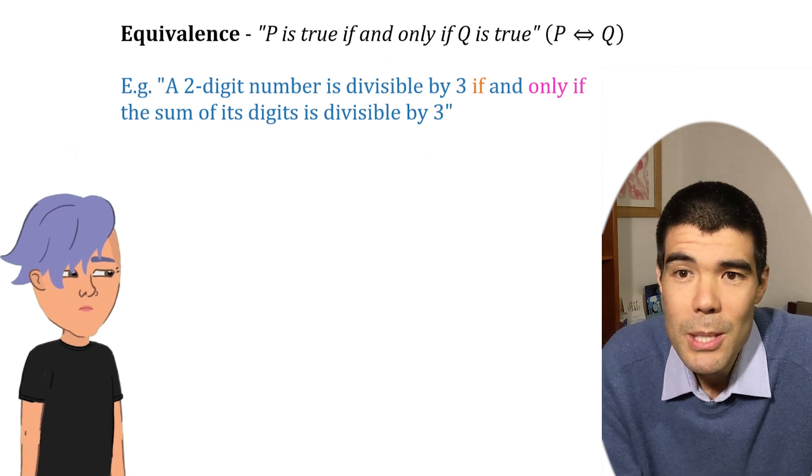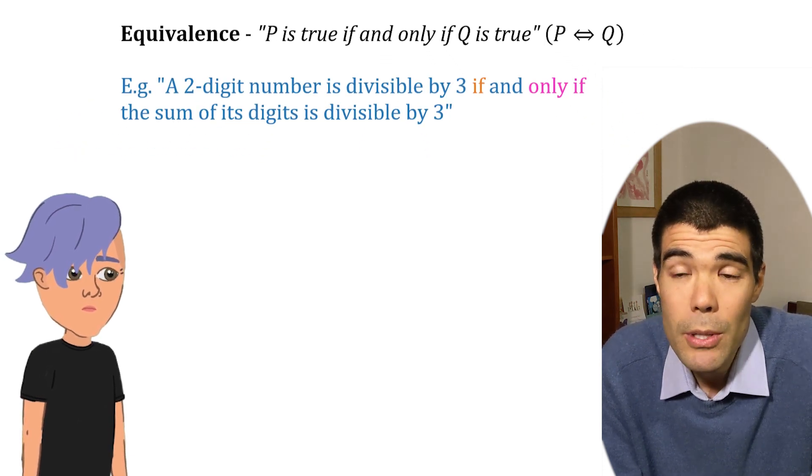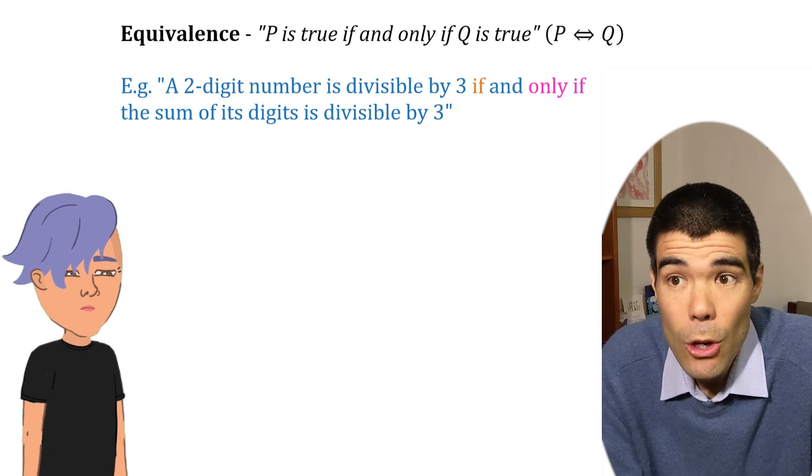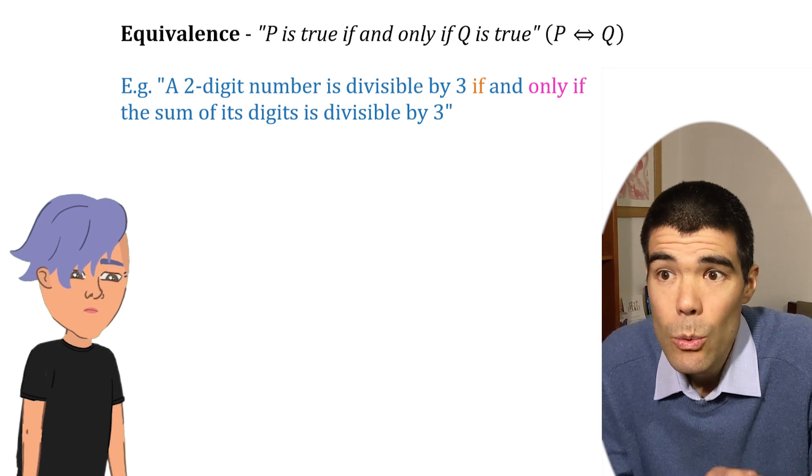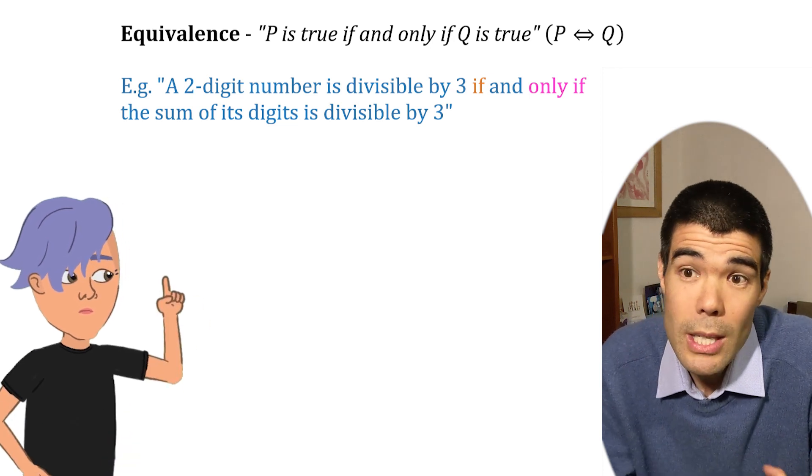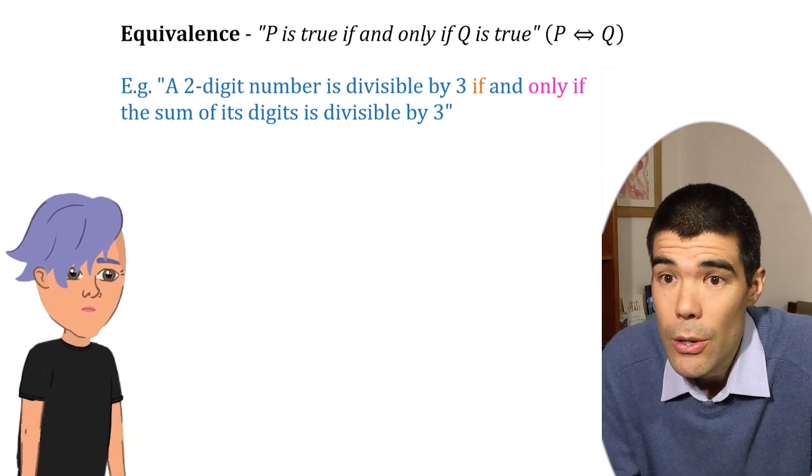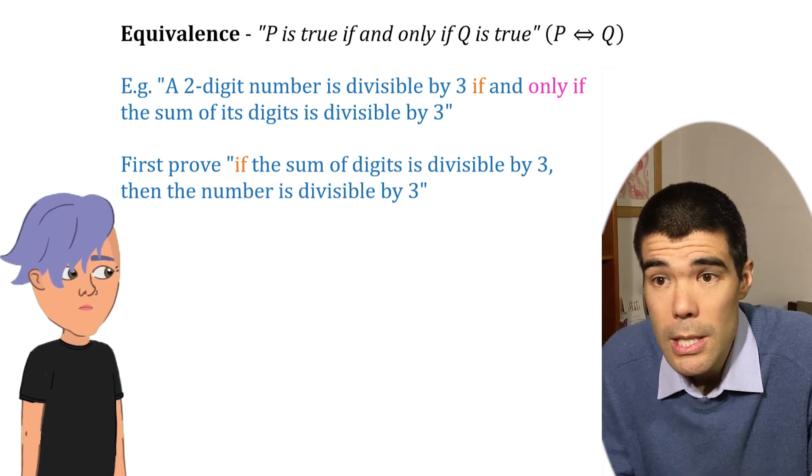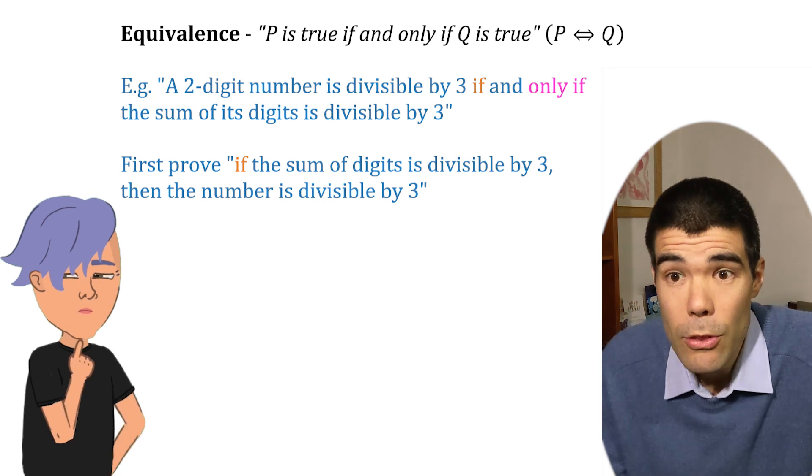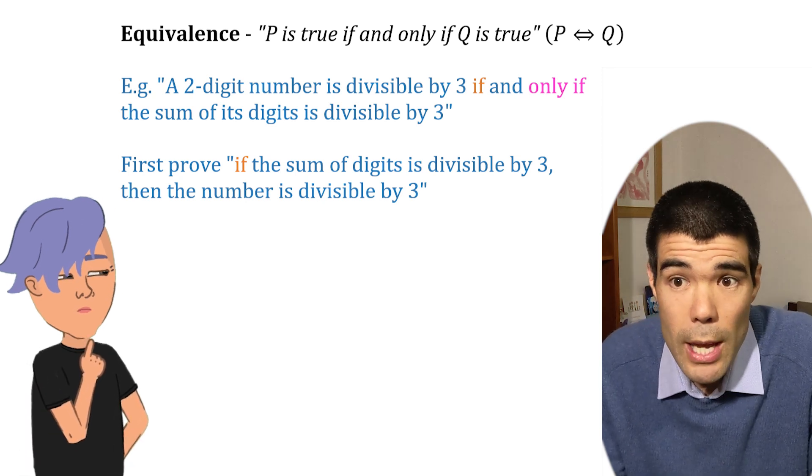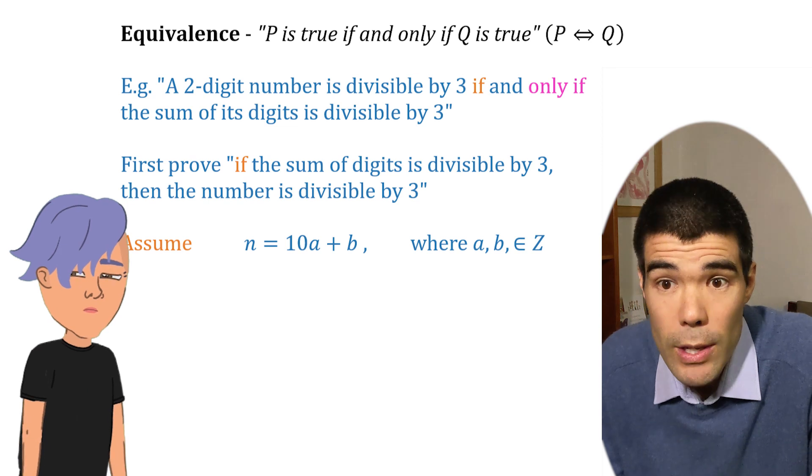Absolutely. Let's prove the statement a two-digit number is divisible by 3 if and only if the sum of its digits is divisible by 3. So it's an if and only if statement. We need to prove both directions. Let's do the if part first. So if sum of the digits is divisible by 3, then the two-digit number is also divisible by 3. So we assume we have a two-digit number whose sum of digits is divisible by 3.